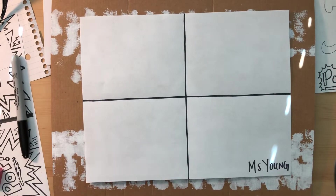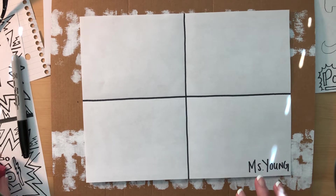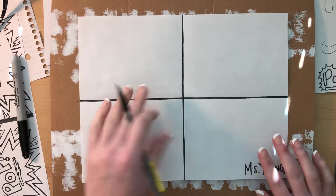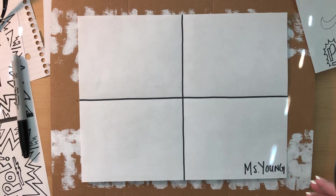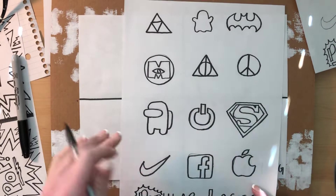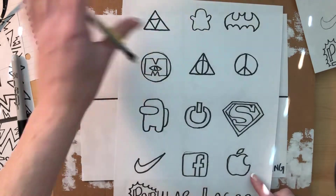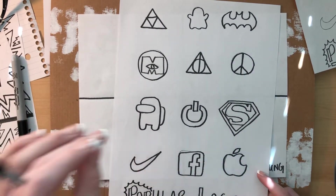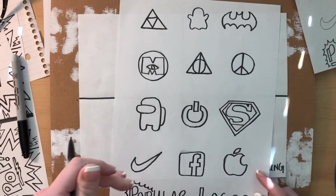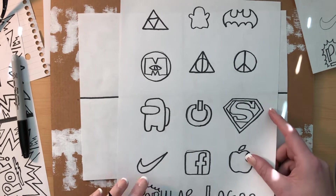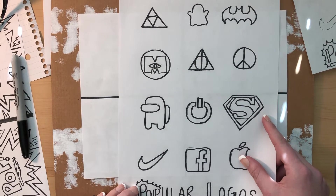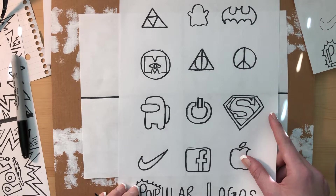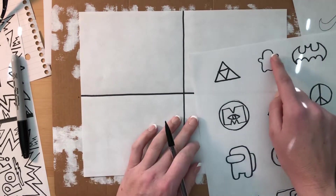I'm going to take out my pencil first, just in case I need to erase a little bit. I'll go over it in Sharpie in a minute. I'm going to choose one of my symbols. You can choose your own as long as it's a popular symbol everyone would recognize. I think I'm going to do the Snapchat ghost — he's pretty cute. It's good to have a picture of it nearby so you can look at it while drawing.